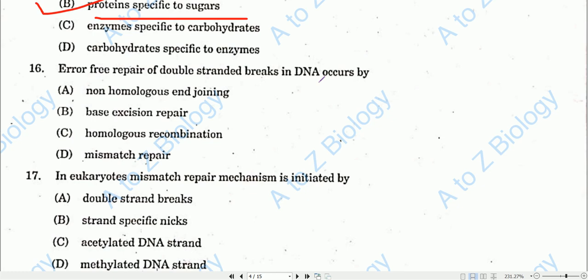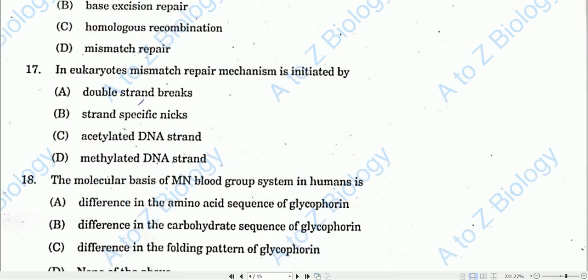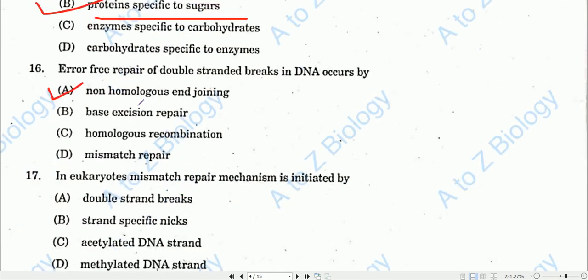Question number sixteen: Error-free repair of double-stranded DNA breaks occurs by non-homologous end joining. This involves KU70/KU proteins in the non-homologous end joining process. Option B will be the correct one.